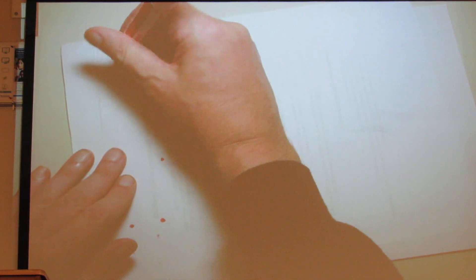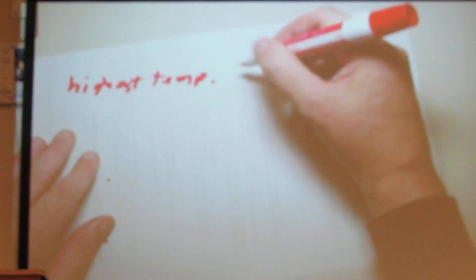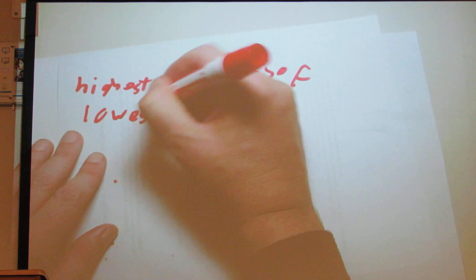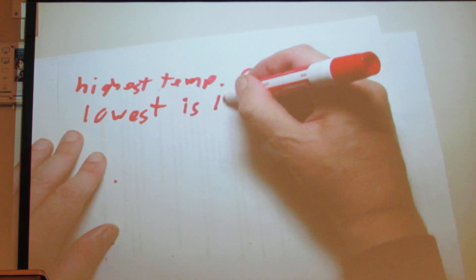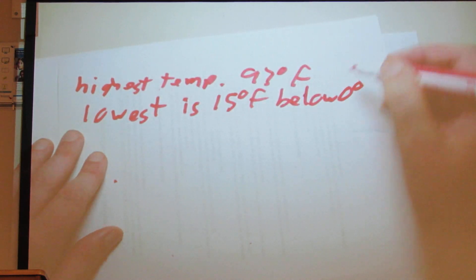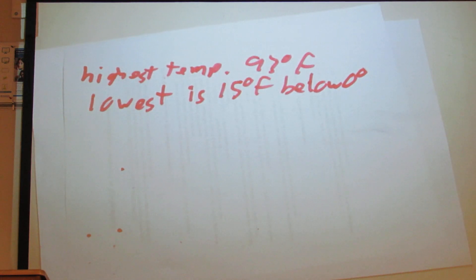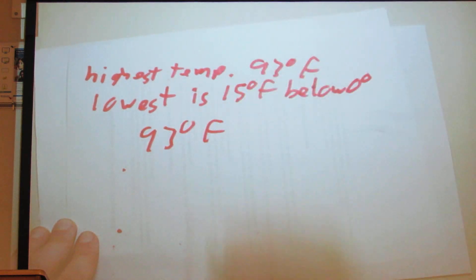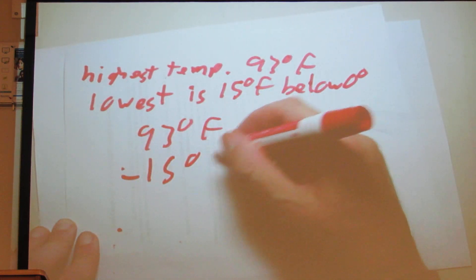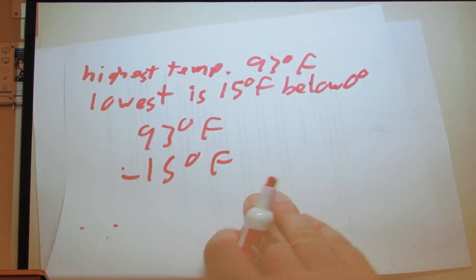Then you'll have a word problem where it says the highest temperature was 93 degrees Fahrenheit and the lowest is 15 degrees Fahrenheit below zero. It's just asking you to write what the highest and lowest values are. The highest is 93 degrees Fahrenheit; the lowest, because it's 15 below zero, is negative 15 degrees Fahrenheit. What it's looking for is that you put the negative sign in.